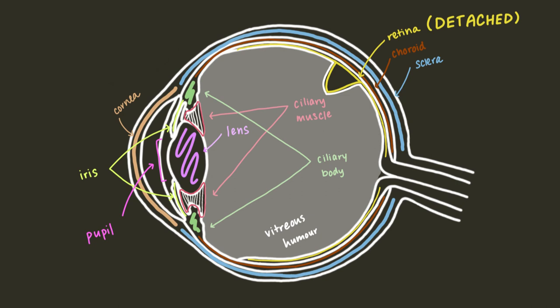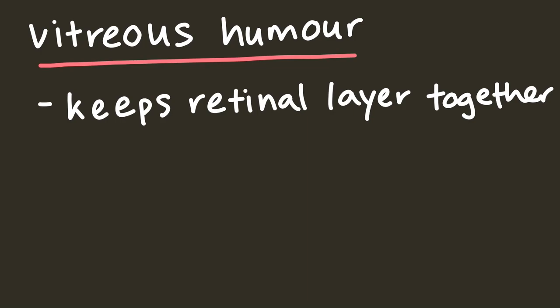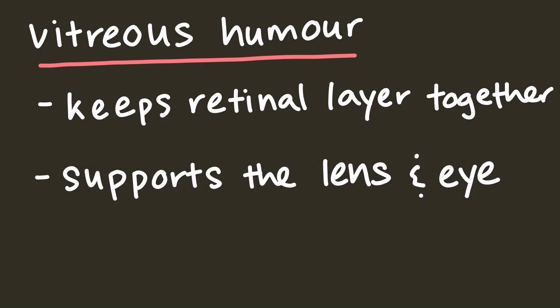This damages photoreceptors and can lead to blindness. But if it's caught early enough, it's possible to reattach the layers. On top of protecting against retinal detachment, vitreous humor also supports the lens and ensures that our eyes don't collapse in on themselves.